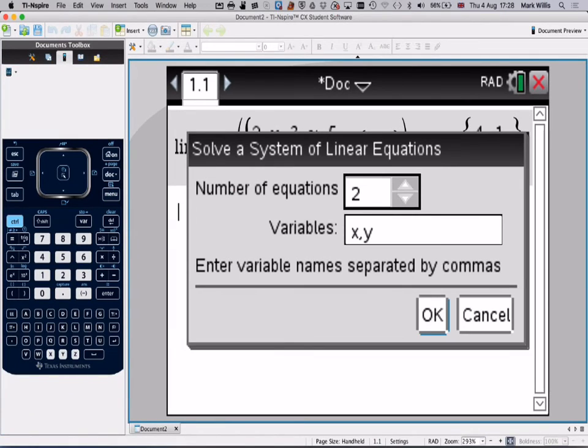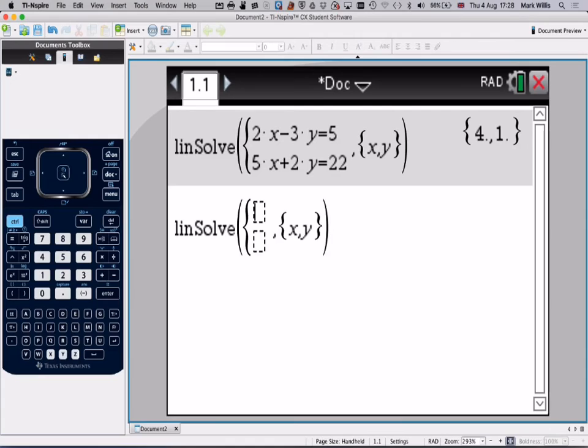There are two equations, variables x and y, and now we just write them in the original format, which is 2x equals 5 plus 3y. 2y equals 22 minus 5x.